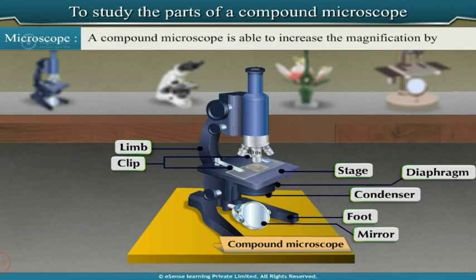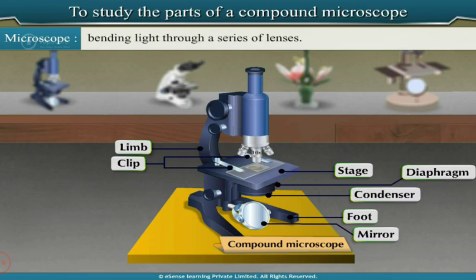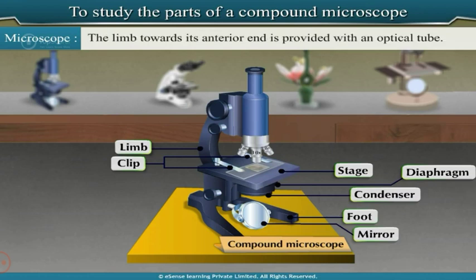A compound microscope increases magnification by bending light through a series of lenses. The limb, towards its anterior end, is provided with an optical tube.